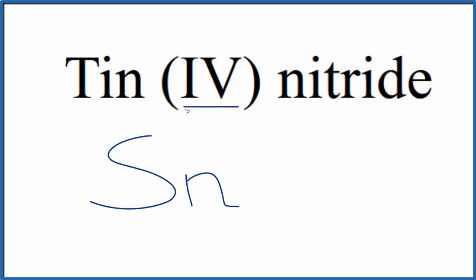This Roman numeral 4 here in parentheses means tin is going to be 4+. Nitride, that's from nitrogen. So we're going to write N for that nitride ion there. Nitride is always 3-.